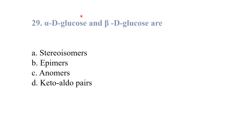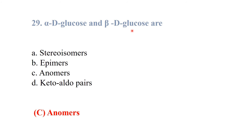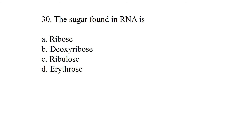Alpha-D-glucose and beta-D-glucose are anomers of each other. The sugar found in RNA is ribose.